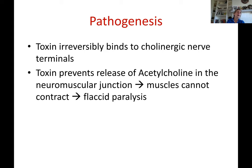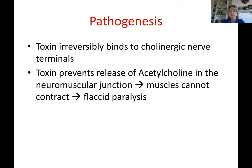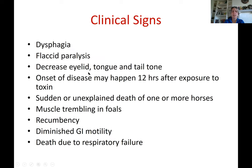The pathogenesis: the botulinum toxin irreversibly binds to cholinergic nerve terminals. Acetylcholine normally binds to muscle receptors to trigger contraction. Because the toxin irreversibly occupies those nerve terminals, acetylcholine cannot bind to the muscles, and the muscles cannot contract. This produces the clinical signs of flaccid paralysis — the muscles are paralyzed but flabby and flaccid rather than rigid — ultimately leading to the same outcome as tetanus: respiratory failure.